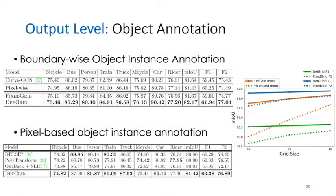Quantitatively, our deformable grid achieves much better performance than baseline, especially in terms of boundary F-scores.